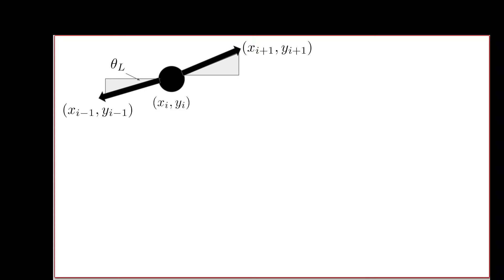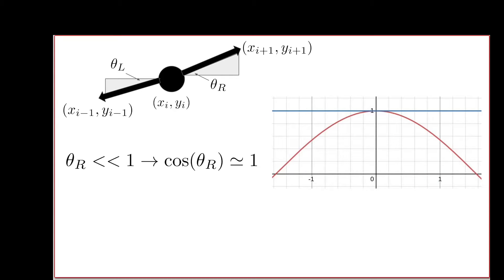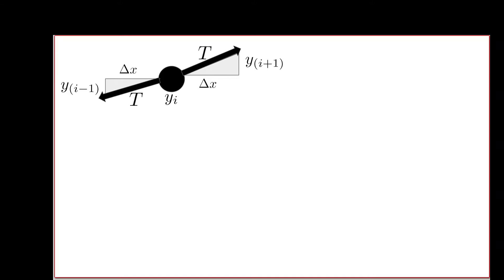Let's assume for this string that theta_L and theta_R are both much less than 1 radian. In that case, cosine of theta_R and cosine of theta_L will be approximately equal to 1. Here we've graphed y equals 1 in blue and y equals cosine theta in red, and notice in the region from negative 0.2 radians to positive 0.2 radians, these two curves are very close to each other. This is called the small angle approximation, often very useful in physics. For these small amplitude disturbances, we can talk about cosine of theta, which relates to the horizontal component of the force.